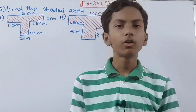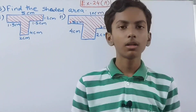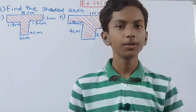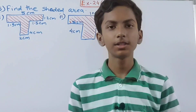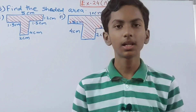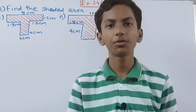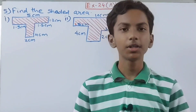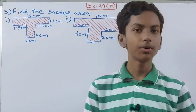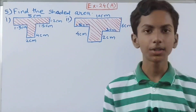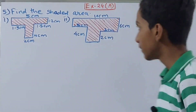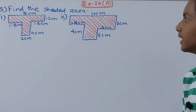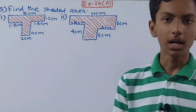Hello friends, welcome back to my YouTube channel Unlock Your Learning. In this video we are going to solve ICAC Mathematics Class 7, Chapter 24: Area and Perimeter, Exercise 24A, Question Number 5. It says: find the shaded area.